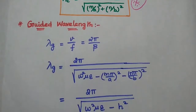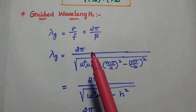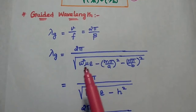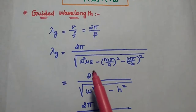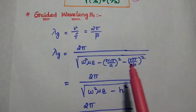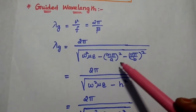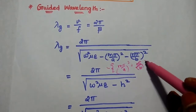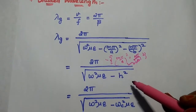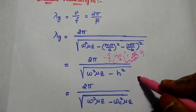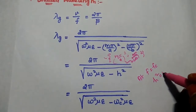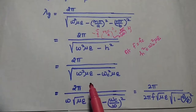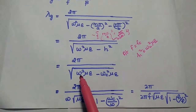Next, we derive the guided wavelength. The guided wavelength can be obtained using the formula 2 pi by beta. So lambda g is equal to 2 pi divided by the phase shift constant expression we already derived: square root of omega squared mu epsilon minus (m pi by a) squared minus (n pi by b) squared. The term (m pi by a) squared plus (n pi by b) squared is h squared, and at cutoff frequency this equals omega c squared mu epsilon. We substitute that value here. In the next step, we take omega squared mu epsilon as a common factor from the square root.